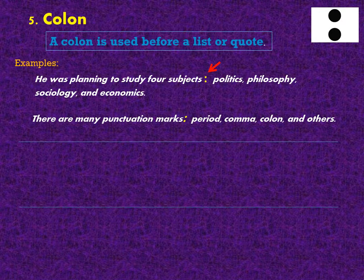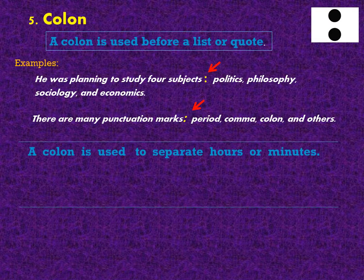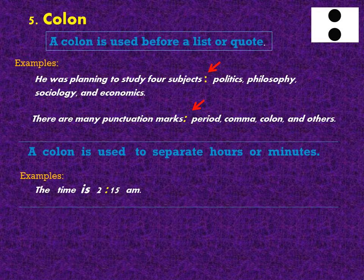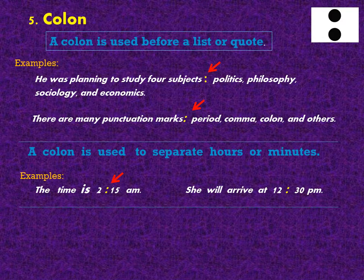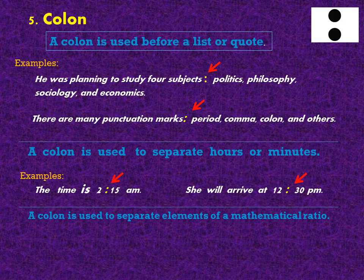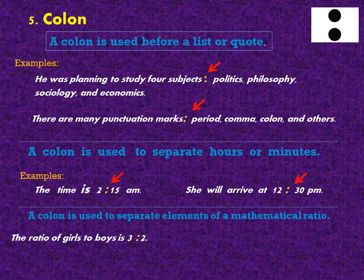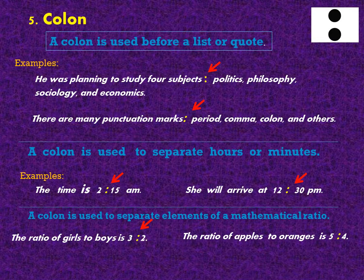There are many punctuation marks: period, comma, colon, and others. A colon is also used to separate hours from minutes. For example: The time is 2:15 am. She will arrive at 12:30 pm. A colon is also used to separate elements of a mathematical ratio. For example: The ratio of girls to boys is 3:2. The ratio of apples to oranges is 5:4.